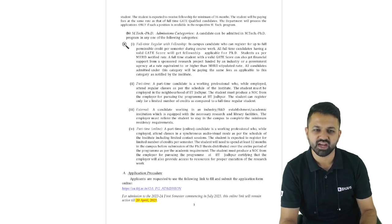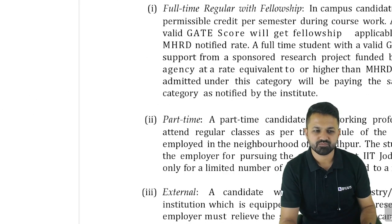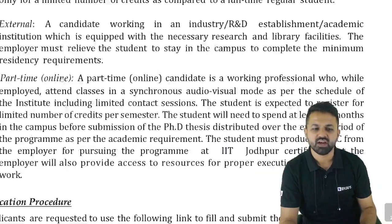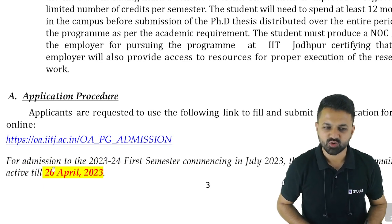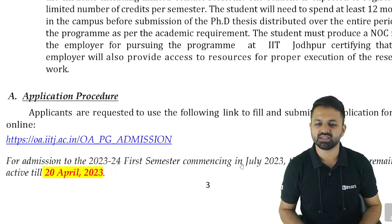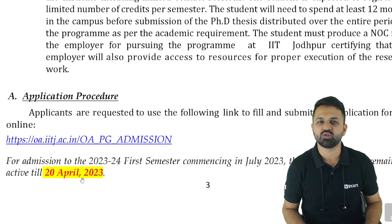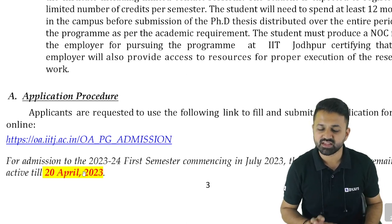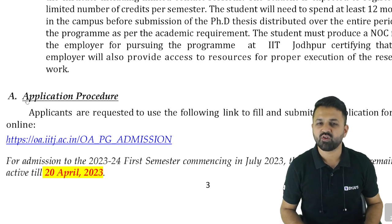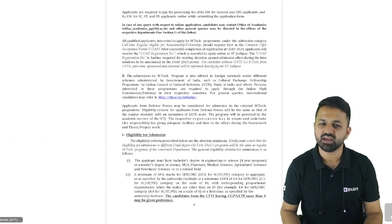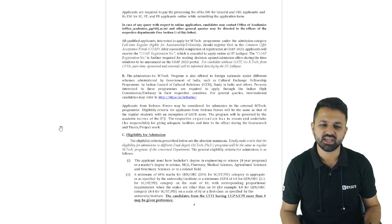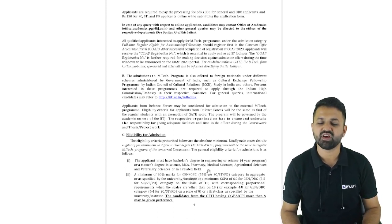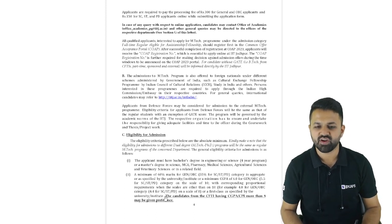The application procedure and last date for applying: for admission to 2023-2024, the first semester commencing in July, this online link will remain active up to 20th April. If you have not filled this form for IIT Jodhpur, if you are looking for a specialized branch and your score is low, you can check their cut-off and apply. The eligibility is the same — B.TECH with 60% for General and OBC, and 55% for category students.